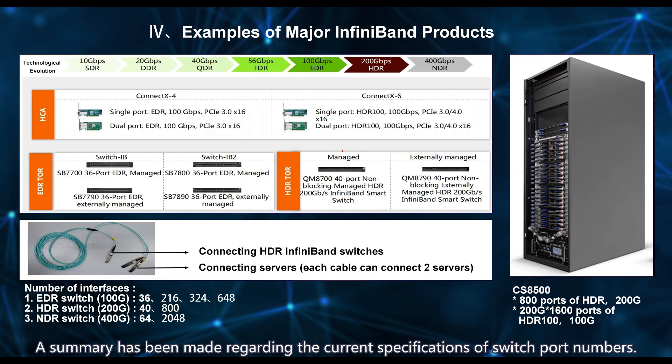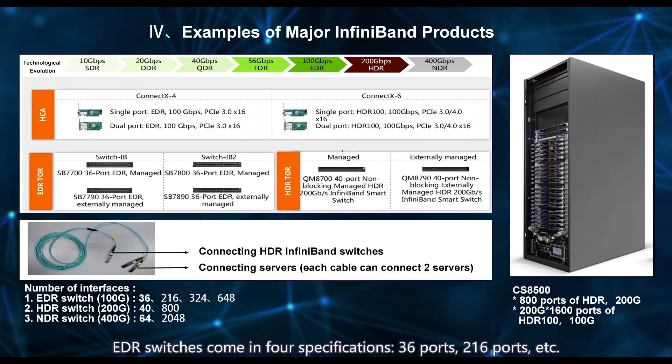A summary has been made regarding the current specifications of switch port numbers. EDR switches come in four specifications: 36 ports, 216 ports, etc. HDR switches, however, only come in two types: 40 and 800 ports. NDR switches can support either 64 ports or a large 2048-port switch.